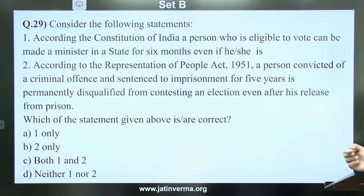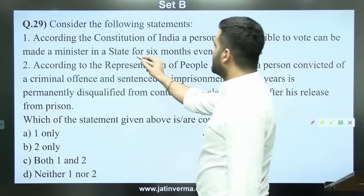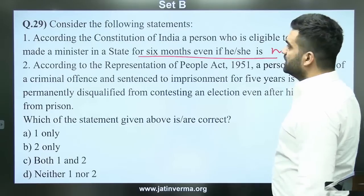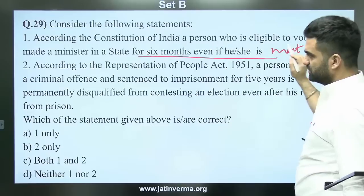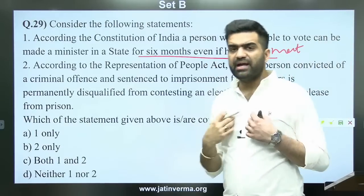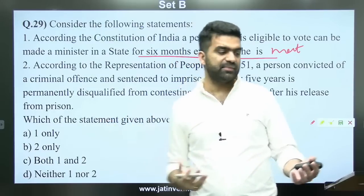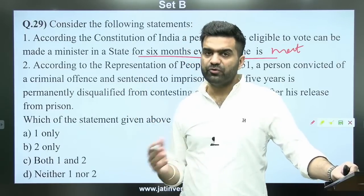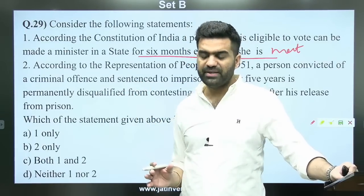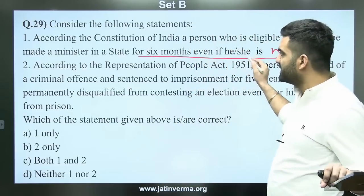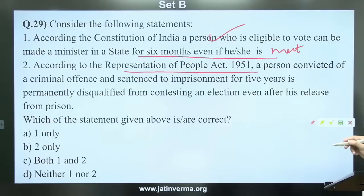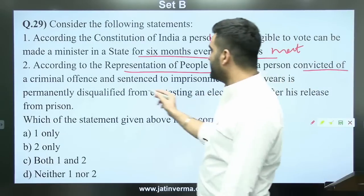Question 29: According to the Constitution of India, a person eligible to vote can be made a minister in a state for six months even if he or she is not an MLA. This is correct — even if I am not a member of Parliament, Lok Sabha, Rajya Sabha, or a nominated member, I can still be appointed as a minister. According to the Representation of People's Act 1951, a person convicted and sentenced to imprisonment for five years is permanently disqualified from contesting.